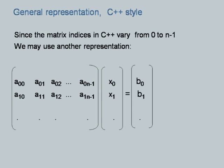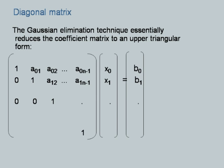Using one N-by-N array A and one N-element one-dimensional array B, we find the values of the independent variables, stored in array X. The general upper triangular form has x0 with coefficient 1 in the first equation, x1 with coefficient 1 in the second equation, and so on up to xN-1 with coefficient 1 in the last equation. Back substitution is then applied starting from the last equation.